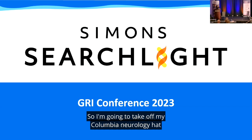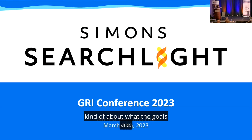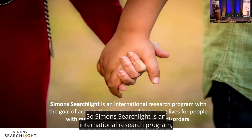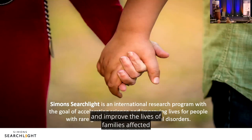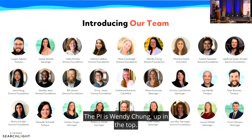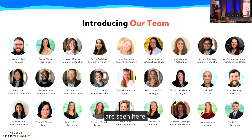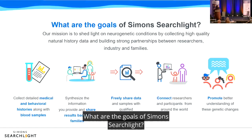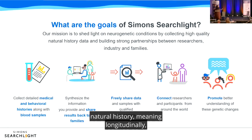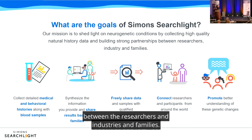I'm putting on my Simons Searchlight hat. Simons Searchlight is an international research program with the goal of accelerating science and improving the lives of families affected by rare genetic neurodevelopmental disorders. The PI is Wendy Chung. The mission is to shed light on neurogenetic disorders — it's genetics first, not autism only. The goal is to collect high-quality longitudinal natural history data and foster relationships between researchers, industry, and families.